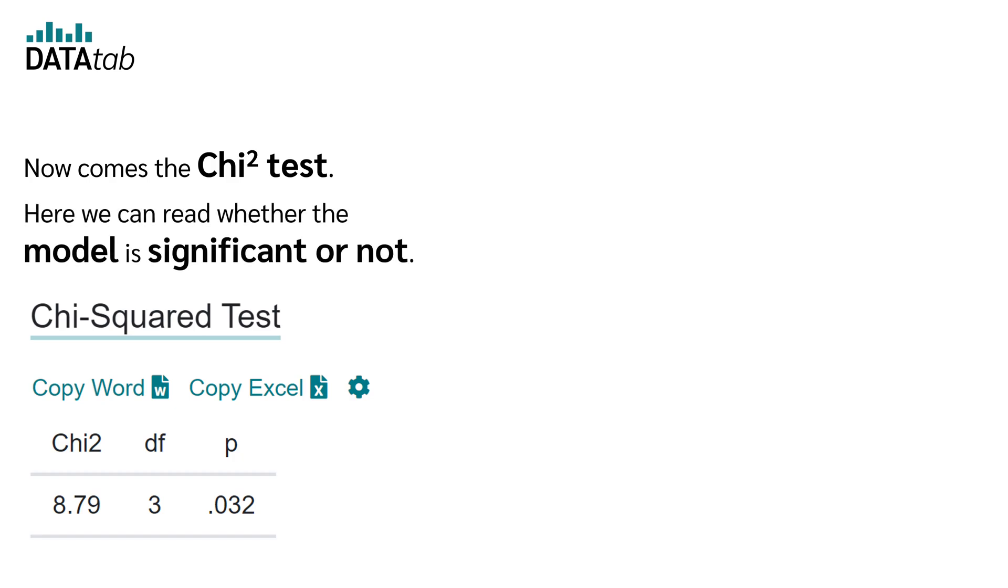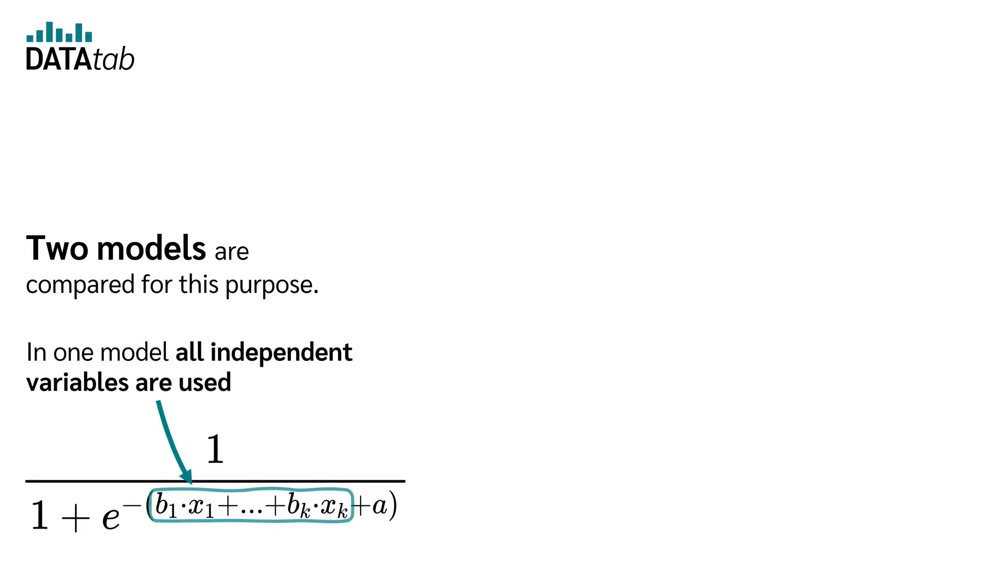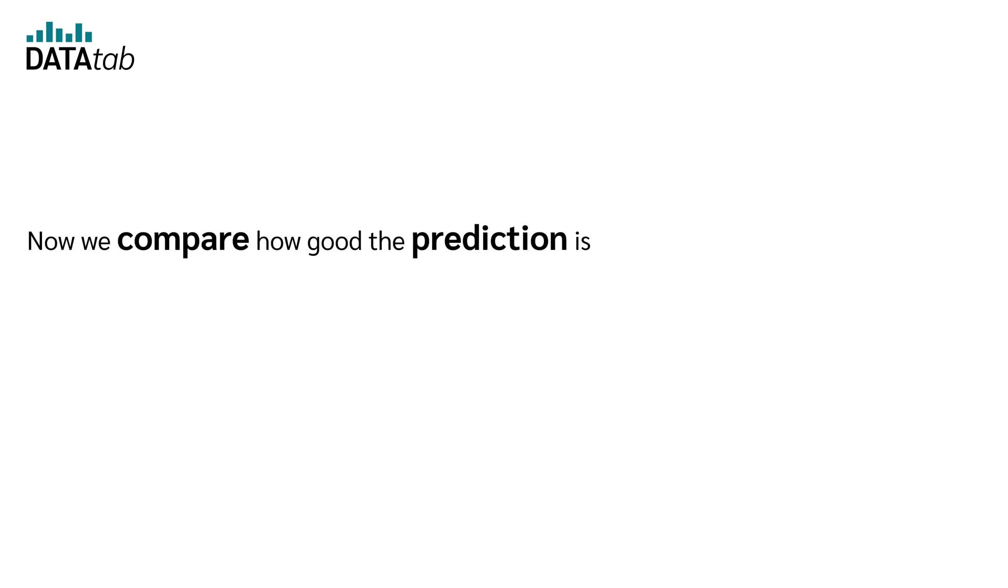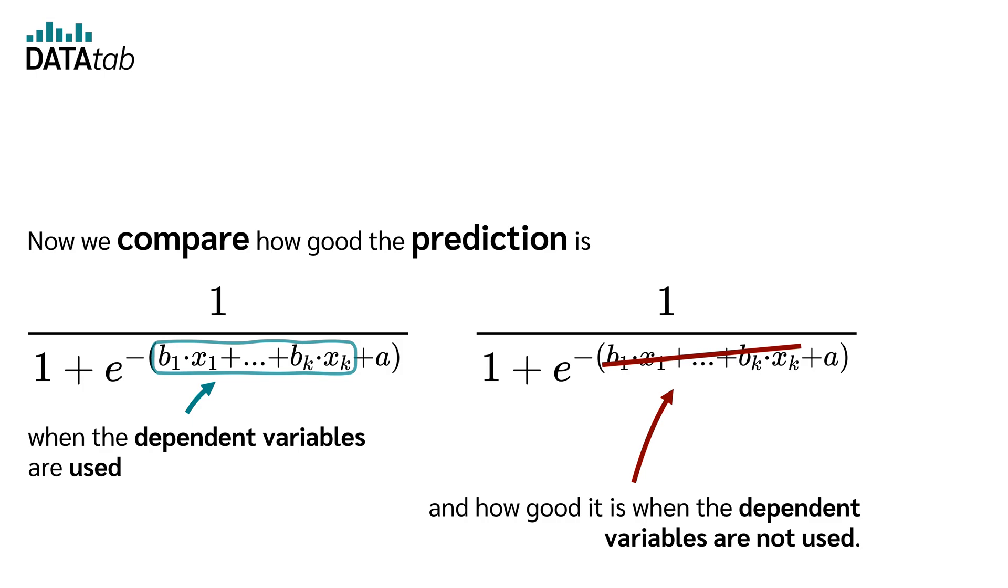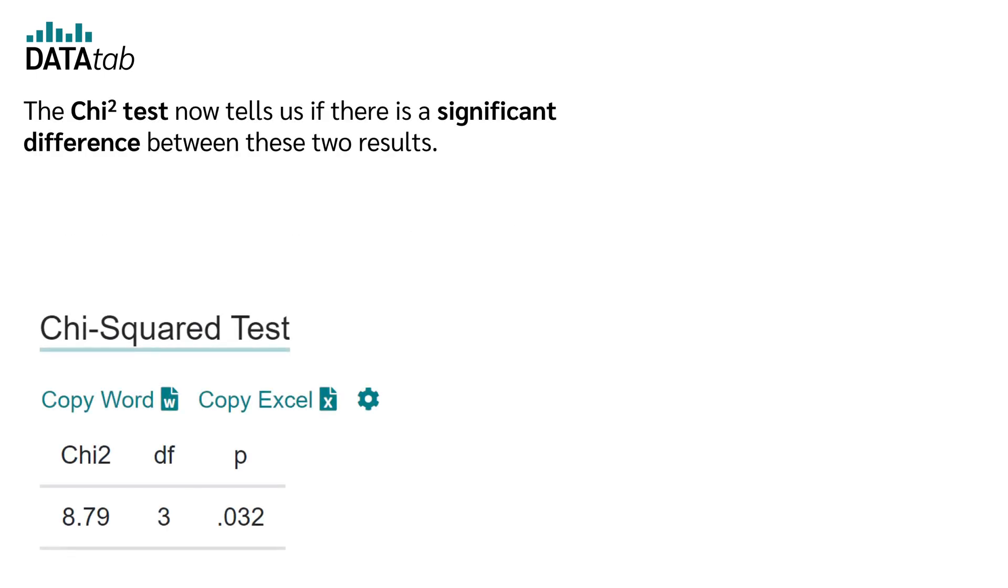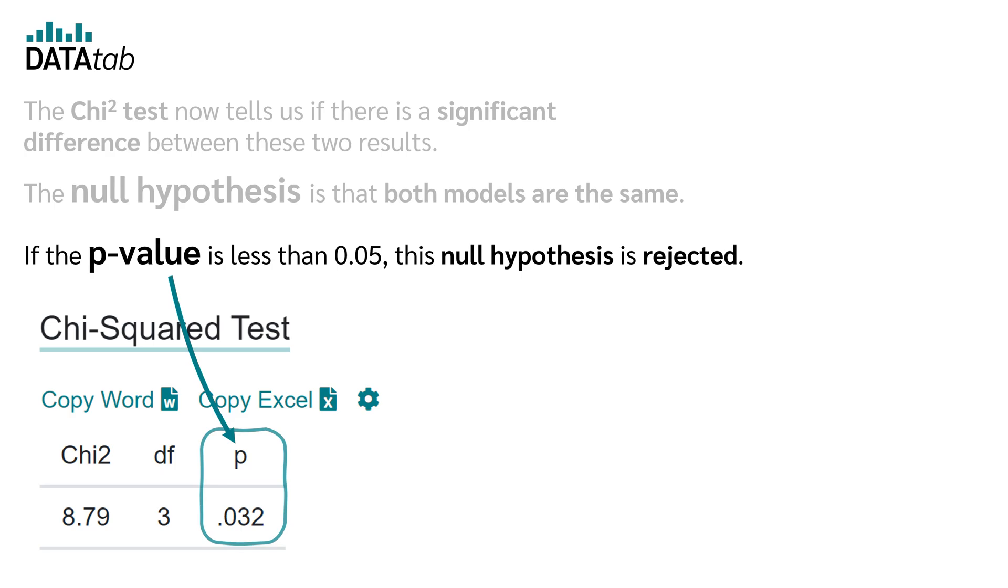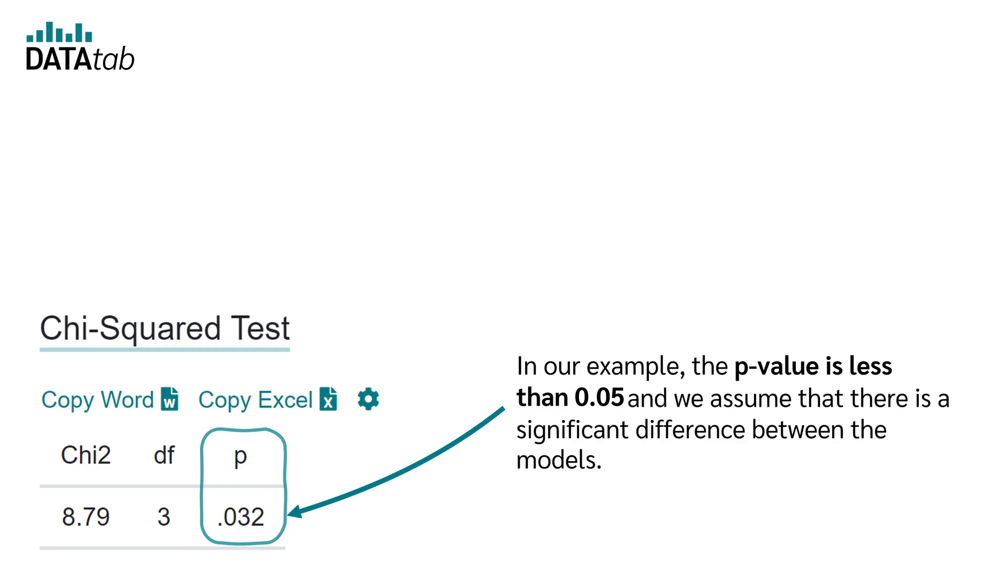Now comes the chi-square test. Here we can read whether the model is significant or not. Two models are compared for this purpose. In one model all independent variables are used and in the other model the independent variables are not used. Now we compare how good the prediction is when the dependent variables are used and how good it is when the dependent variables are not used. The chi-square test now tells us if there is a significant difference between these two results. The null hypothesis is that both models are the same. If the p-value is less than 0.05, this null hypothesis is rejected. In our example, the p-value is less than 0.05 and we assume that there is a significant difference between the models. Thus, the model as a whole is significant.